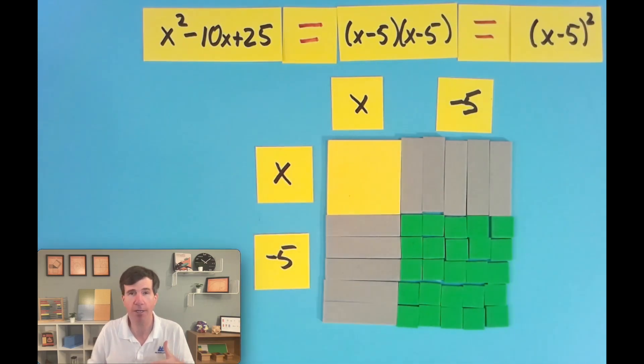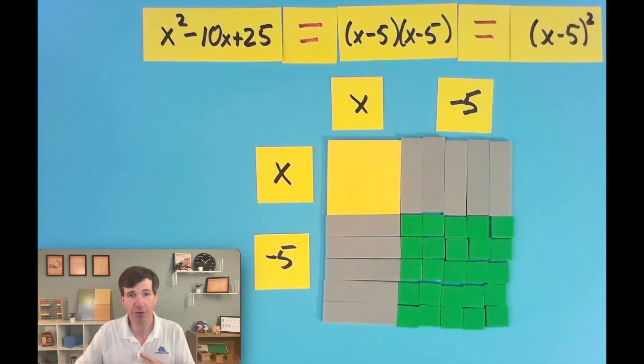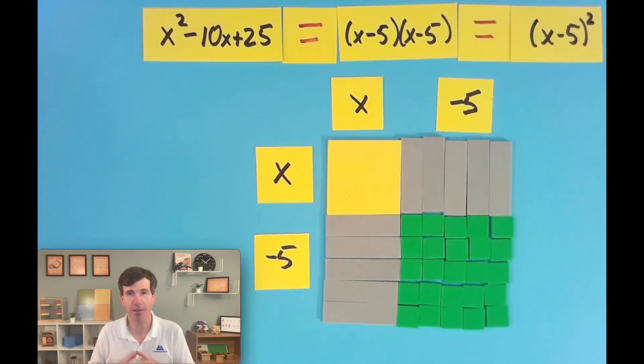And so this trinomial is very special. In fact, this trinomial factors into a perfect square. So we call this a perfect square trinomial. Now most trinomials are not perfect squares. We've seen that we usually get rectangles. But sometimes we get these very special ones. And when we do, factoring it can actually become pretty easy. Because instead of trying to find two different numbers, it's just the same number.